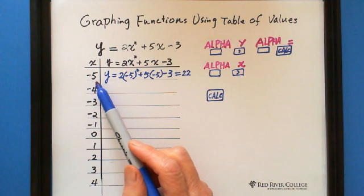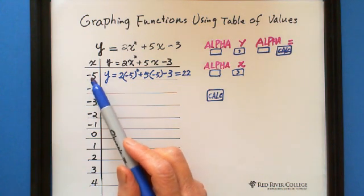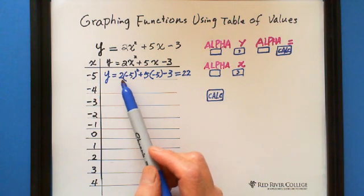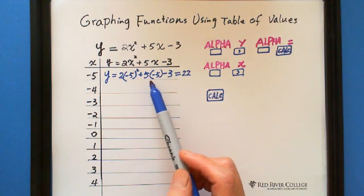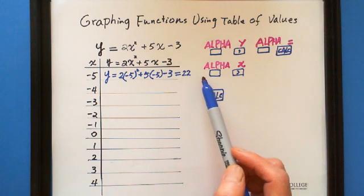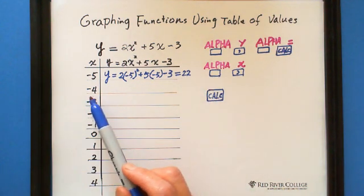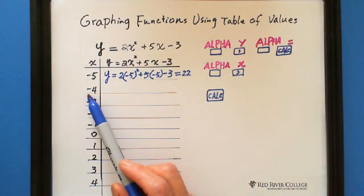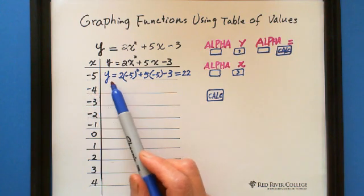say x equals negative 5. You will use calculator, you can enter 2 times negative 5 squared plus 5 times negative 5 minus 3 equals 22. And when you enter x equals negative 4 to find the y value,